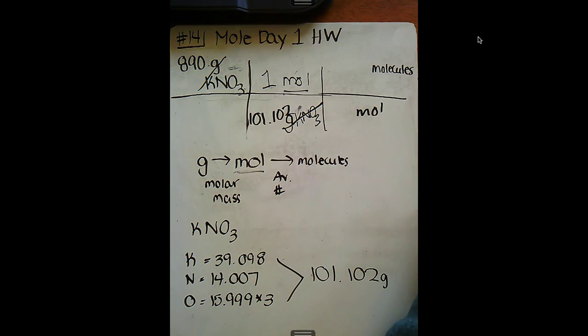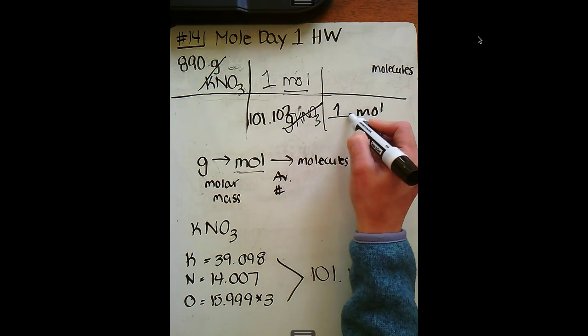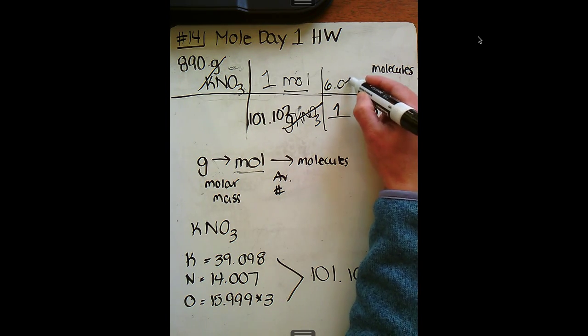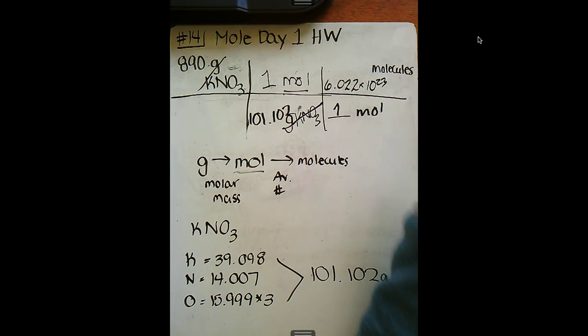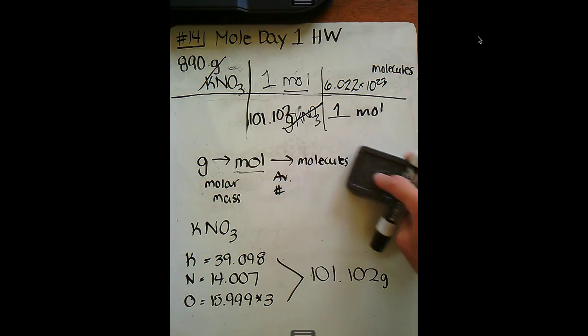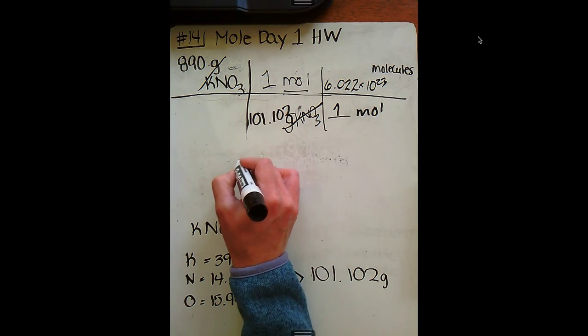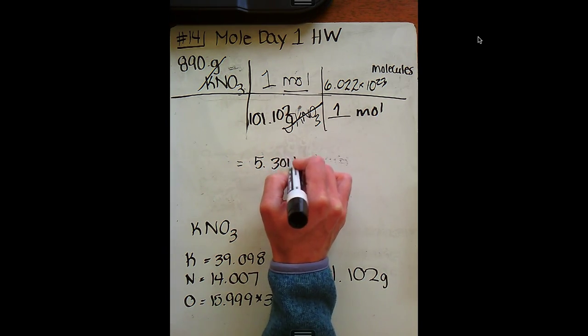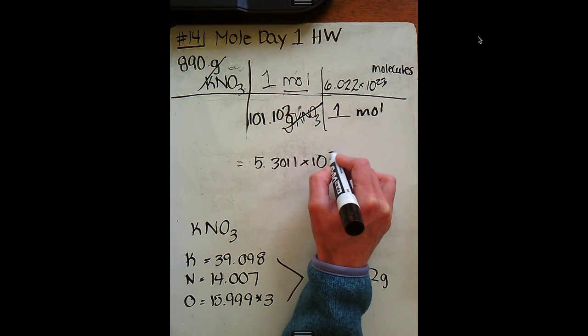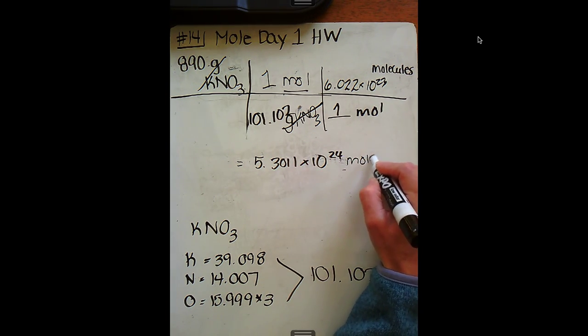So let's go ahead and drop moles down here, and think about, we talked about yesterday, one mole of any substance equals 6.022 times 10 to the 23rd. So now I'm going to give you just a moment here. Go ahead and put that in your calculator, and let's see what you get. I'm getting 5.3011 times 10 to the 24th molecules.